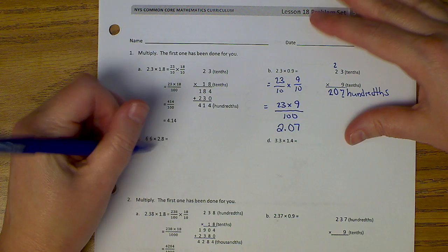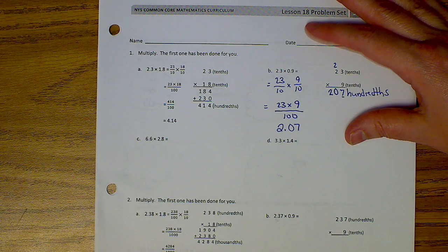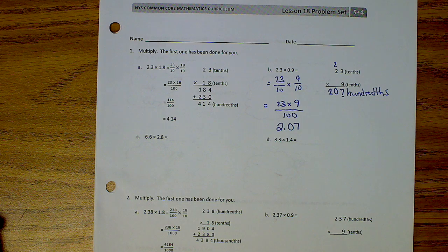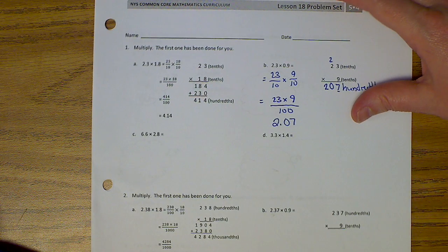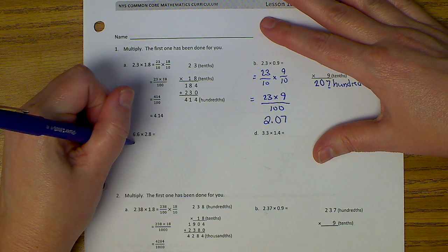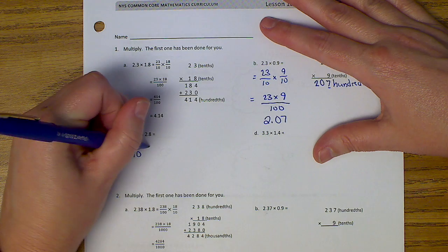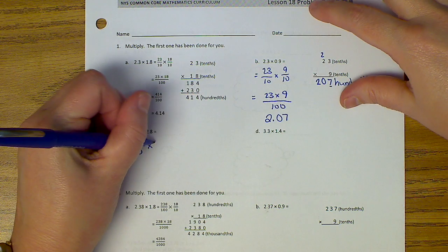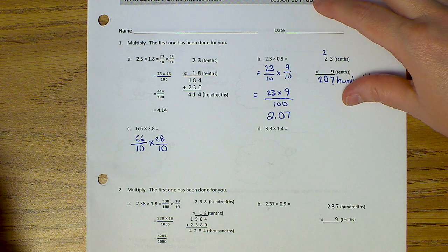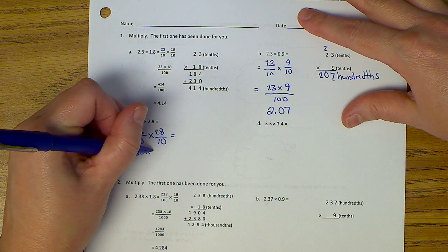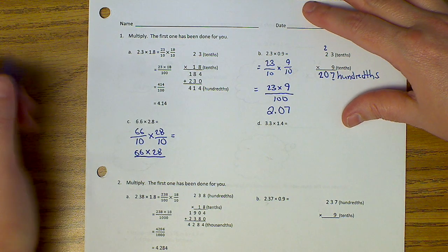So let's look at the next problem. What am I going to put my sixes above? Number six, what do you think? What is my six point six going to go on top of? Okay. Good job. Sixty-six over ten times fifteen? Um, twenty-eight over ten. Times twenty-eight over ten. Equals sixty-six times twenty-eight over, what's ten times ten? Hundred.